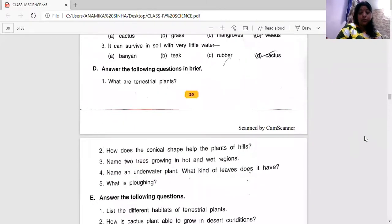The very first question was, what are terrestrial plants? We call them terrestrial plants. The plants that are found on land are called terrestrial plants.